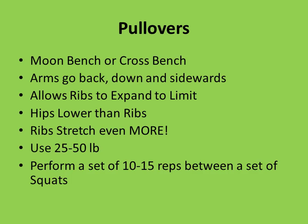These are all very important points. For pullovers, you can use either a bench and do the cross-bench version. The old golden era method was to use a moon bench — a semi-circular bench that would already stretch you out and cause stretching of the ribcage. Nowadays you can't really find them, so a bench is good enough. You go across it and perform your pullover — your arms go back, down, and sidewards. This motion alone allows the ribs to expand pretty much to their limit. By dropping the hips further than the ribs, your ribs can stretch even more. You would only use a very light weight of 25 to 50 pounds, and perform a set of 10 to 15 reps between sets of breathing squats.